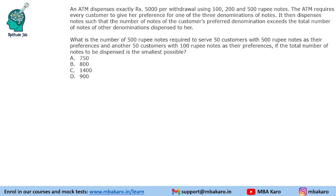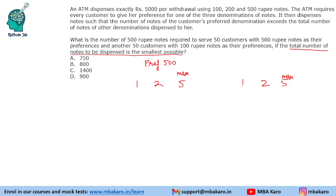Question 4: what is the number of ₹500 notes required to serve 50 customers with ₹500 as their preference and another 50 customers with ₹100 as their preference, if the total number of notes dispensed is the smallest possible? To minimize total notes, give as many high-denomination notes as possible. For the 50 customers preferring ₹500, we use the case of 10 notes of ₹500, 0 of ₹200, 0 of ₹100 — giving 500 notes of ₹500 in total.